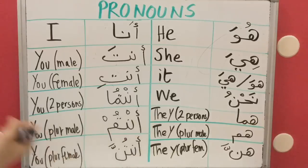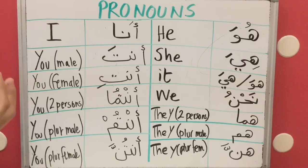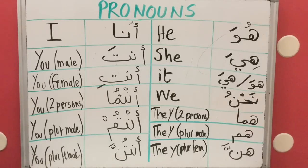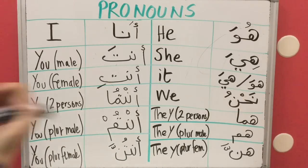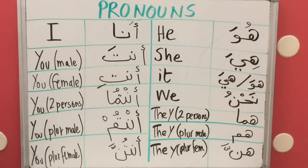Now, 'it'. In Arabic, objects are divided into male things and female things. For example, if I'm talking about a bed — 'this bed is comfortable' — we consider it as something which is male. But if I'm talking about a banana, for example, that is female for us. So things are divided into males and females in Arabic. So for anything, we say either 'Huwa' or 'Hiya'. You'll learn it over time, and when I give you examples, you're going to understand it.